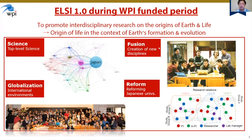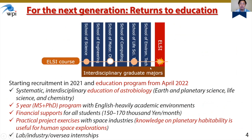In the last 10 years, we promoted interdisciplinary research on the origin of Earth and life, pursuing top-level science and the fusion of existing disciplines to construct a new type of discipline — to rebuild our understanding of the origin of Earth and life. We have strongly promoted the globalization of the institute and the reform of Japanese university systems.